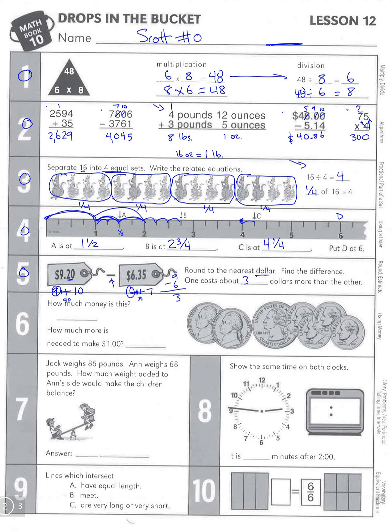Number 6: How much money is this? That's a nickel, these are nickels, that's a quarter, dime, dime, dime, and dime down there. Let's start with our biggest coin: 25, 35, 45, 55, 65, 70, and 75. So we have 75 cents.